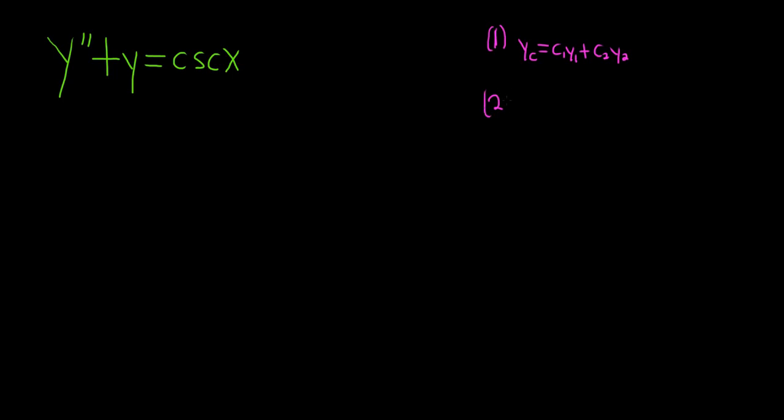The second step in the method of variation of parameters is to compute the w's. So w is going to be the Wronskian of the y's. That means you have y1, y2 in the first row and the derivatives in the second row. Then you have to find w1 and w2. For w1, the trick is you replace the first column of your w with 0 and f(x), and you keep the second column.